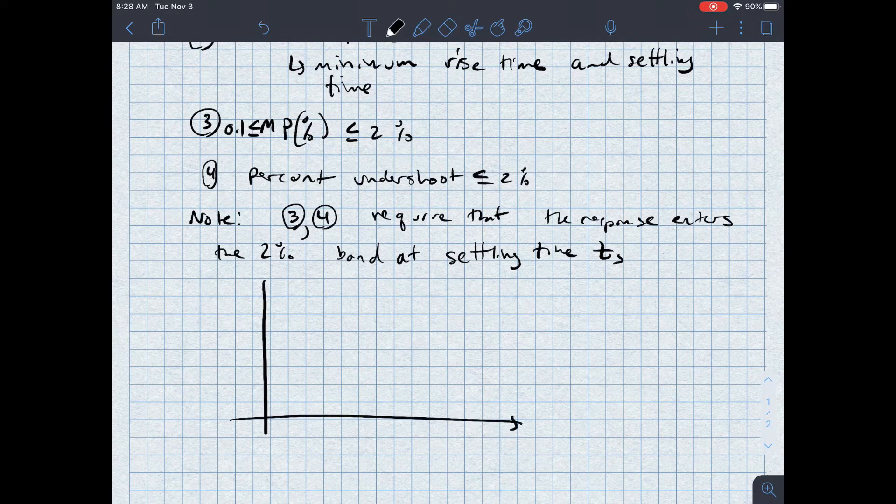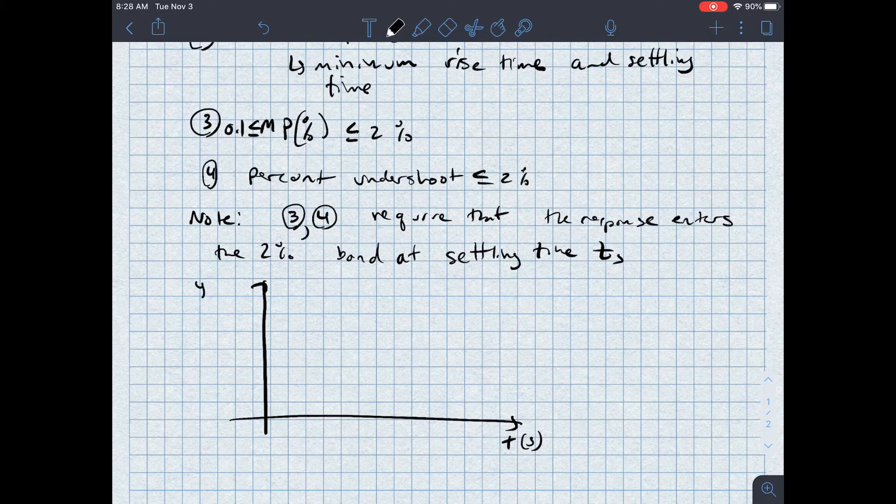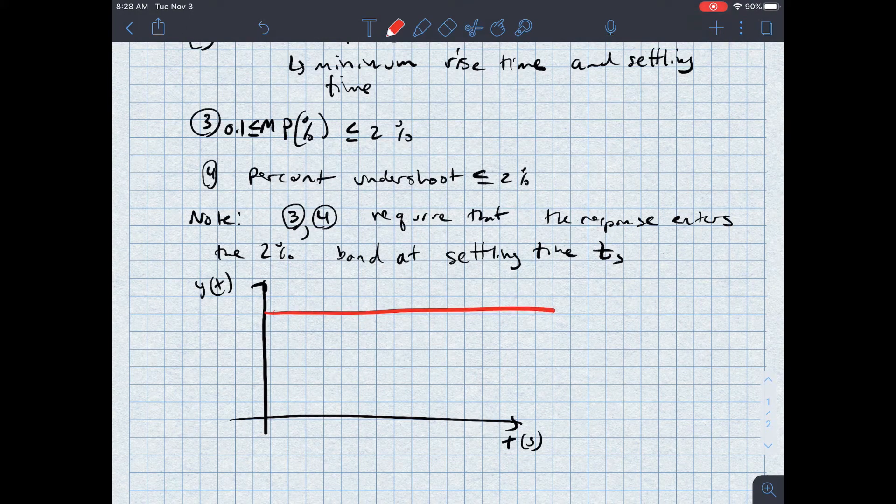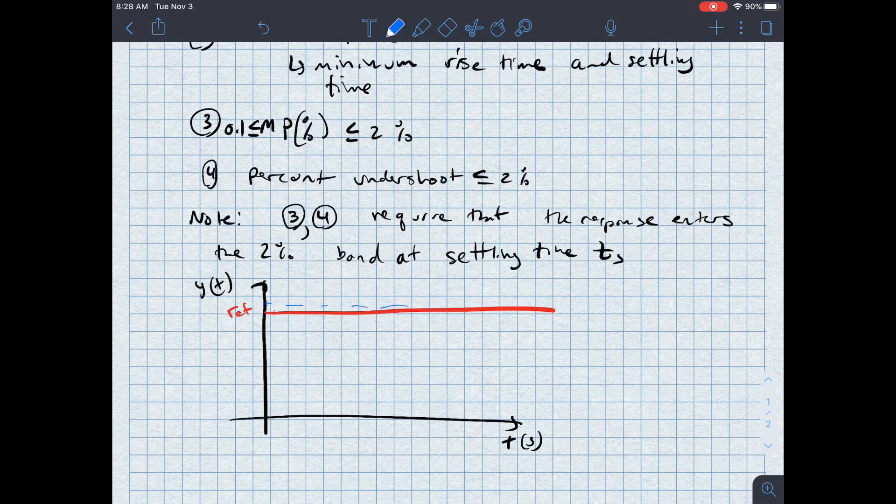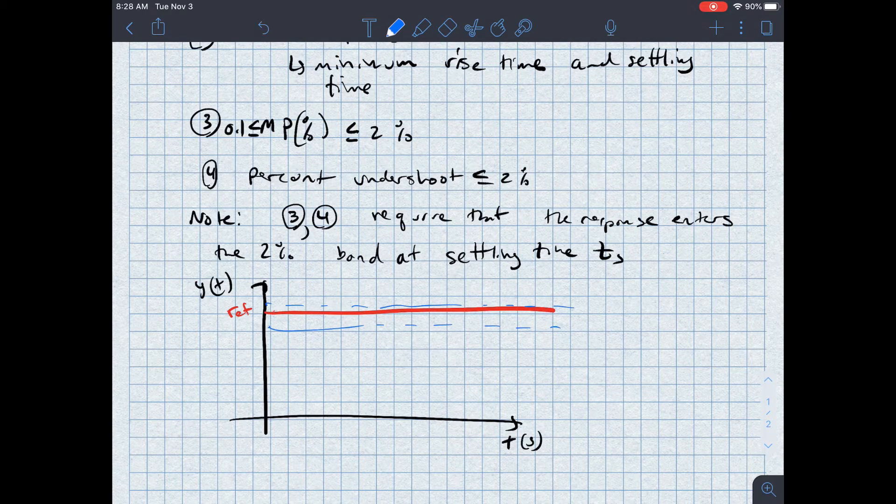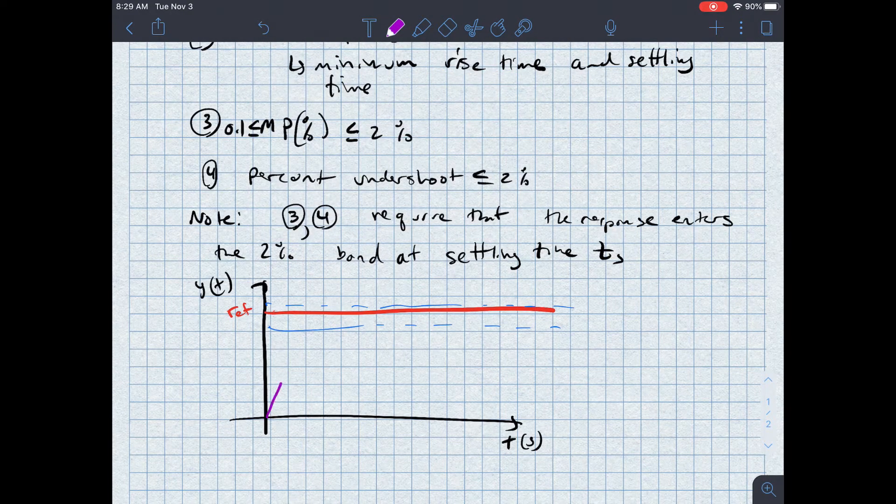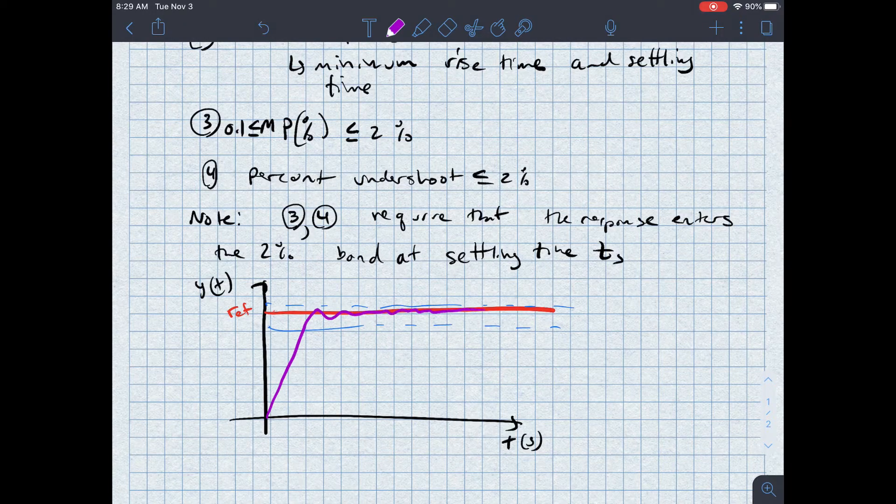If I were to draw a picture of that, this is my time domain plot, this is T in seconds, this is my response Y of T. And let's say that in red I have my reference, then the 2 percent band around my reference I'll show in this dashed line. And here's my response, it comes up but never leaves the 2 percent band.